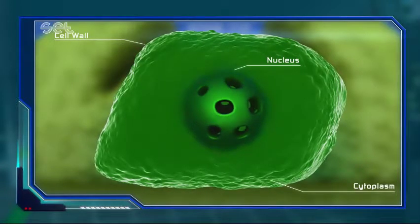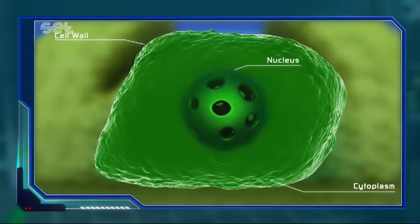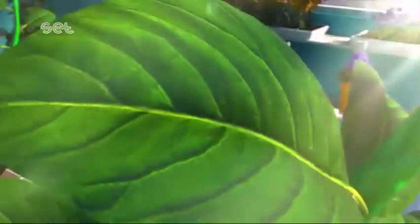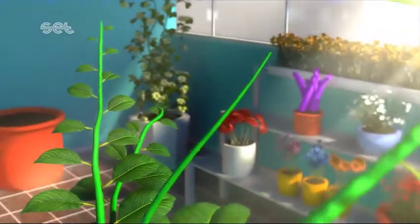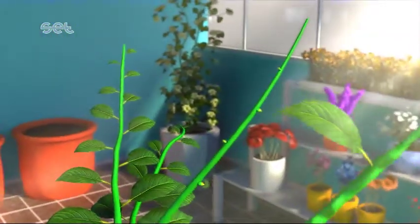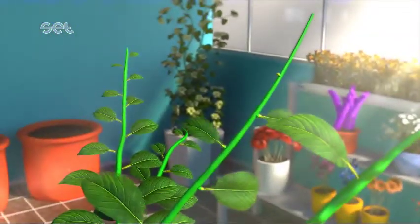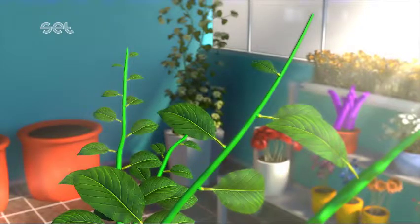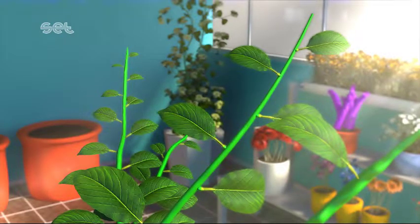The most important property of these cells is that they can produce new cells through mitosis as long as they are alive. The meristematic tissue, having the ability to divide constantly, enables its growth to be infinite.